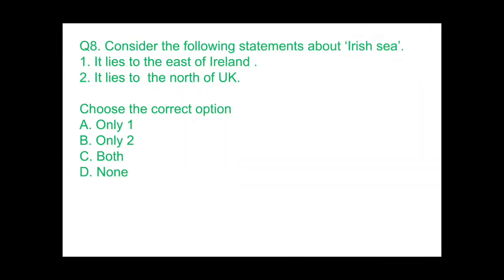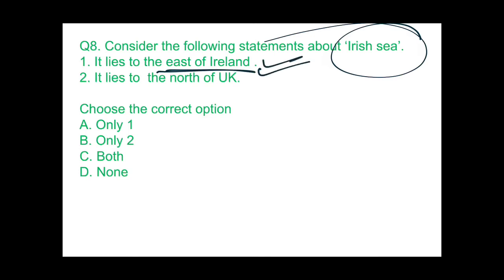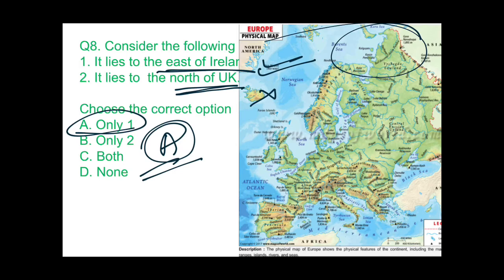Question 8: consider the following statements about the Irish Sea. Statement 1 — it lies to the east of Ireland: correct. Statement 2 — it lies to the north of the UK: wrong, it lies to the west of the UK. So the answer is only Statement 1 (option A). On the physical map of Europe you can see Ireland and the Irish Sea lying to the east of Ireland and to the west of the UK.